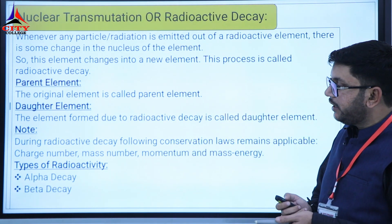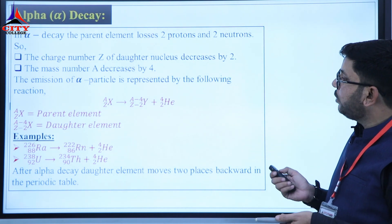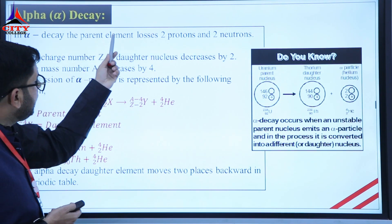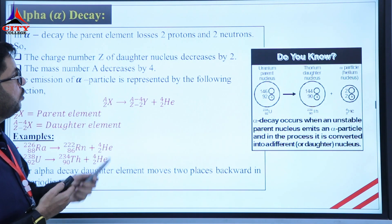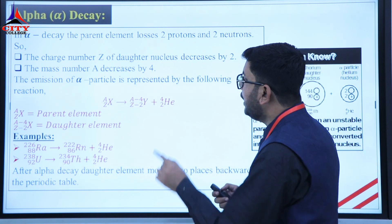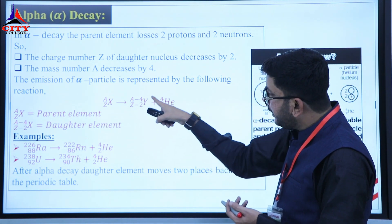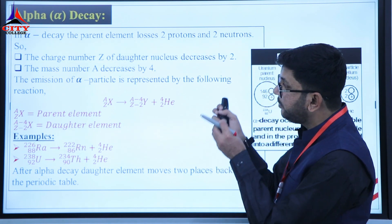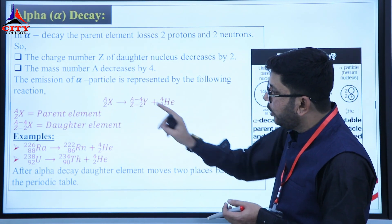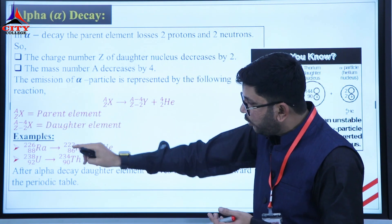The types of radioactive decay are three: alpha decay, beta decay, and gamma decay. In alpha decay, the parent element loses two protons and two neutrons — a helium nucleus is emitted. In alpha decay, the mass number of the daughter nucleus decreases by four, and the charge number decreases by two. This can be represented as: the parent element has mass A and charge Z, and the daughter element has mass (A−4) and charge (Z−2).